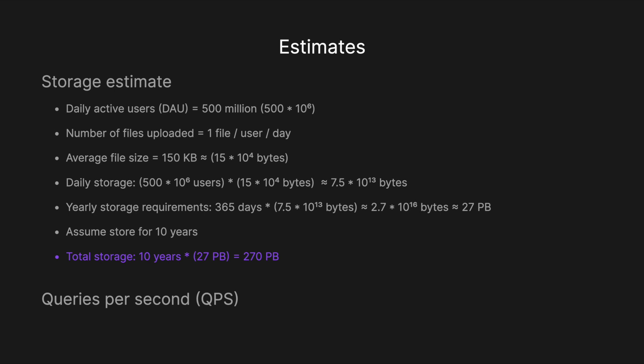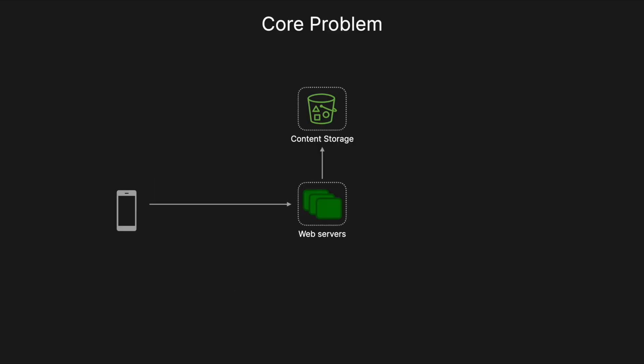For queries per second: with 500 million users uploading once a day, we divide by 24 hours, 60 minutes, and 60 seconds, giving us a QPS of roughly 6,000 — quite a high QPS. Before jumping into the API design, there's a core problem to address first.